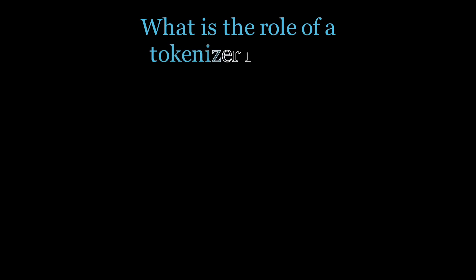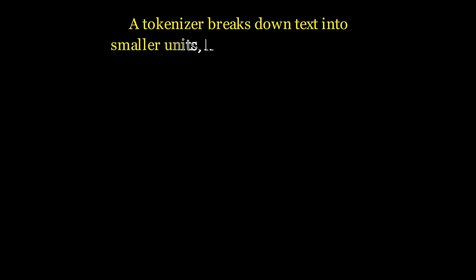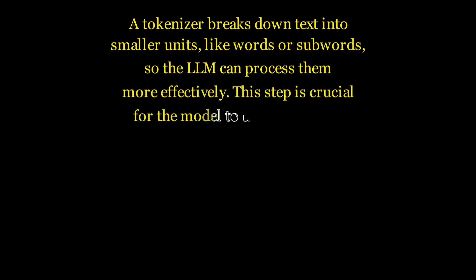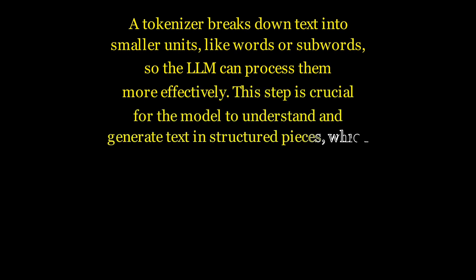What is the role of a tokenizer in LLMs? A tokenizer breaks down text into smaller units like words or subwords so the LLM can process them more effectively. This step is crucial for the model to understand and generate text in structured pieces, which speeds up computation and improves accuracy.